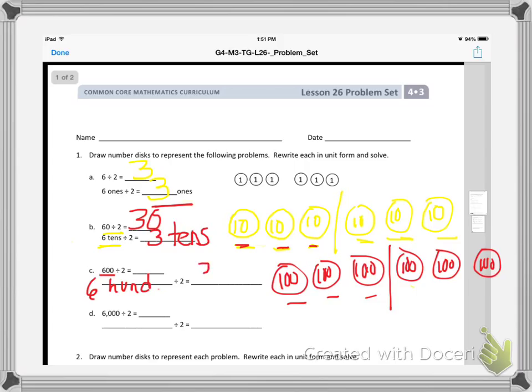And I write 600 divided by 2 equals 300 hundreds. And my answer on top is the number in standard form, and 300 is written as 3-0-0.